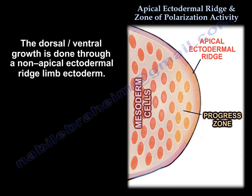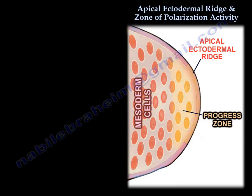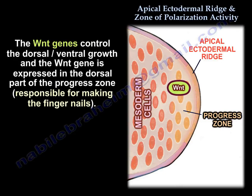In the non-AER limb ectoderm, the WNT genes control the dorsal-ventral growth. The WNT gene is expressed in the dorsal part of the progress zone and is actually responsible for making the nails.